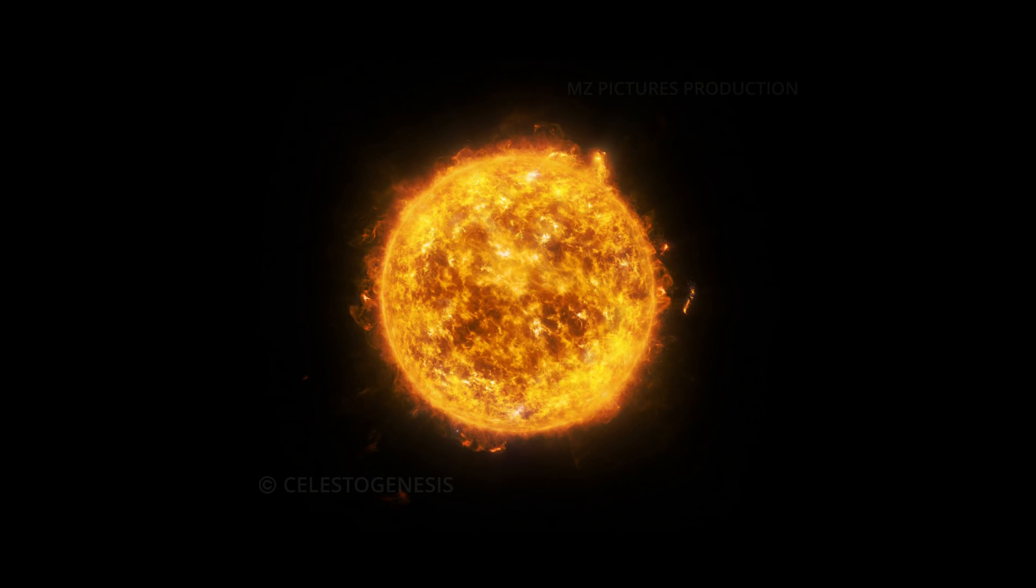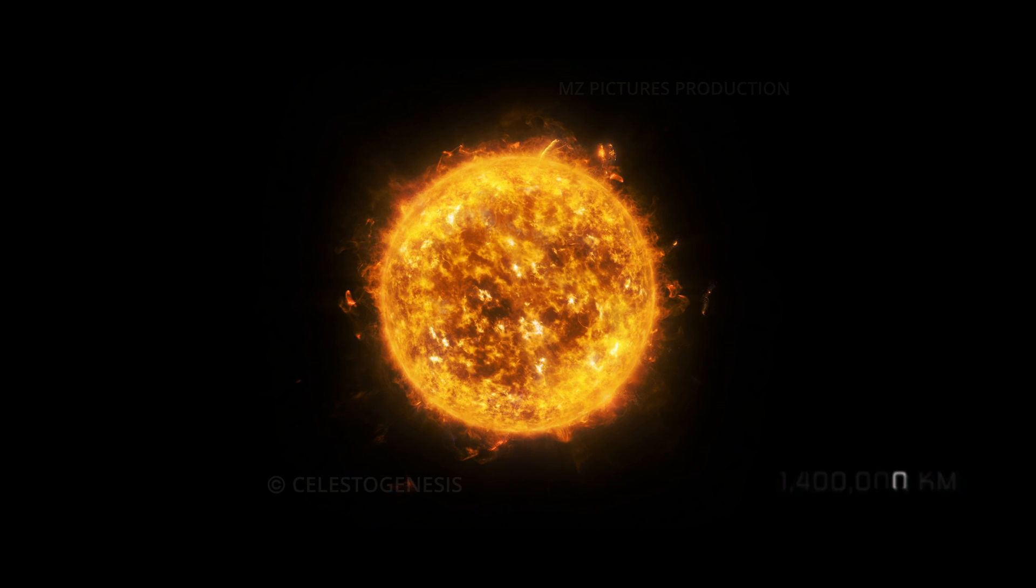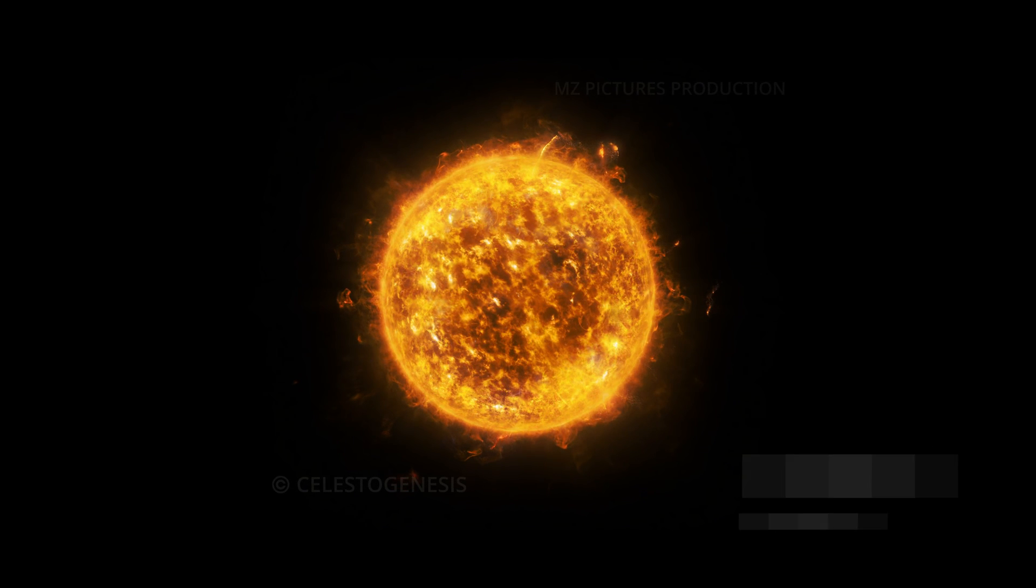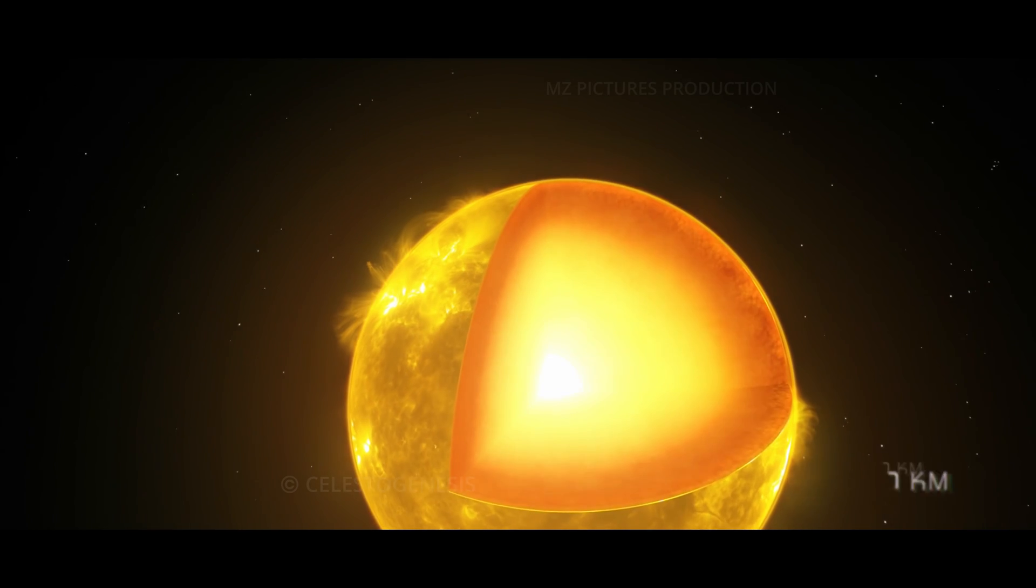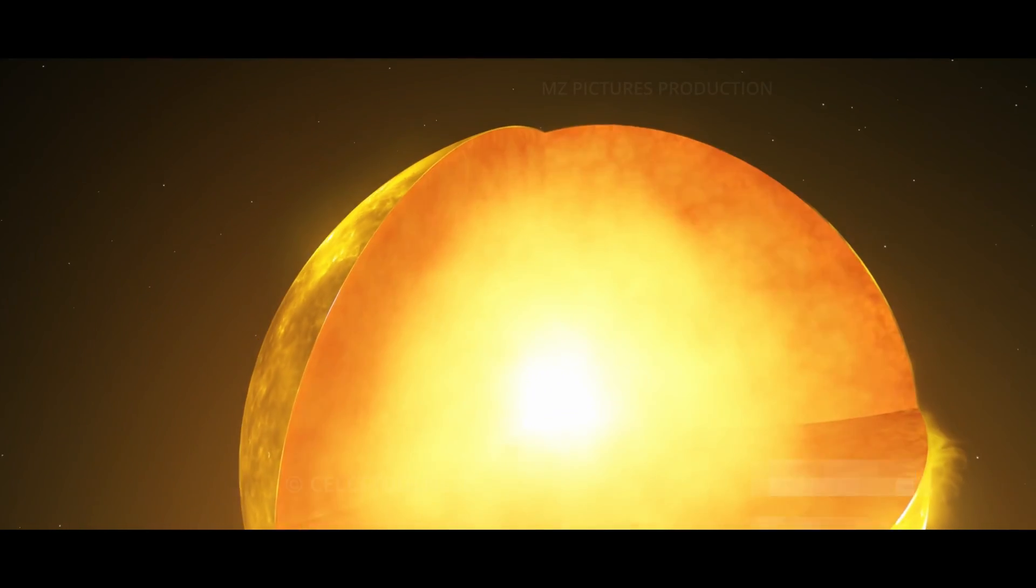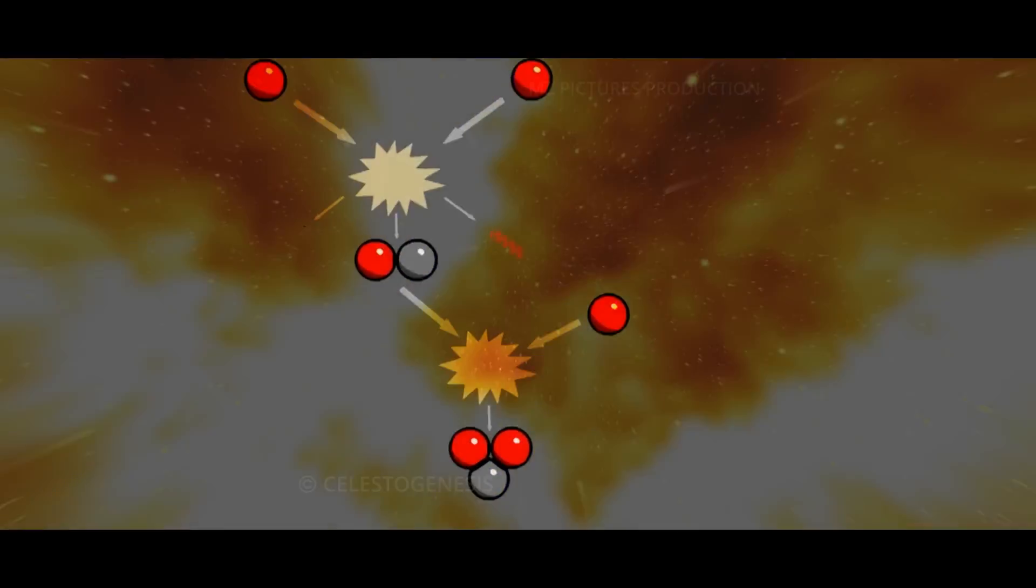Imagine, if you will, an average star with a diameter of about 1,400,000 kilometers. However, its core, the powerhouse of the sun, is only 300,000 kilometers across. That's where hydrogen atoms are squeezed together under immense pressure to form helium, releasing energy in the process.